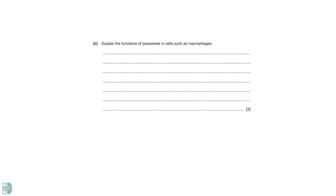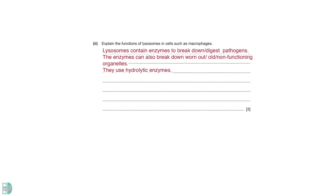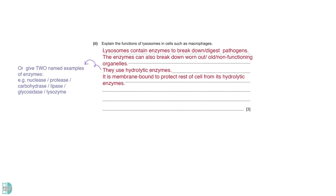Number 2, explain the functions of lysosomes in cells such as macrophages. Lysosomes contain enzymes to break down or digest pathogens. They can also break down worn out, old, and non-functioning organelles of cell components. The enzymes they use are called the hydrolytic enzymes. A lysosome is membrane bound to protect the rest of the cell from its hydrolytic enzymes. There is one AVP for this question. For example, lysosomes digest the pathogen, accept its antigen, allowing antigen presentation.